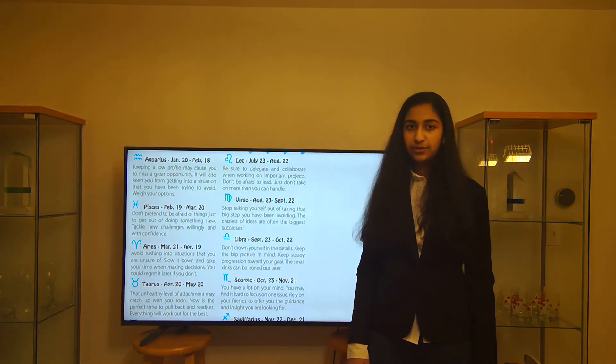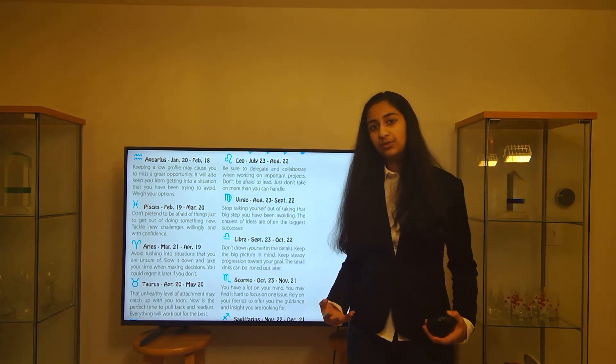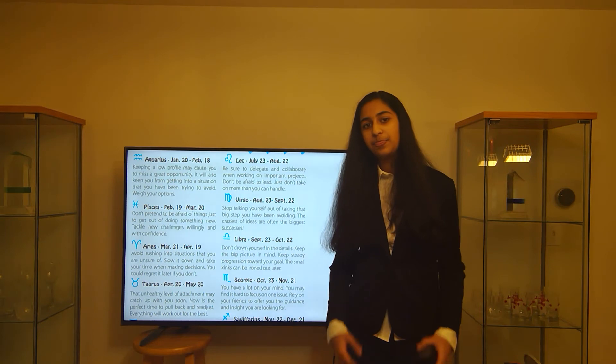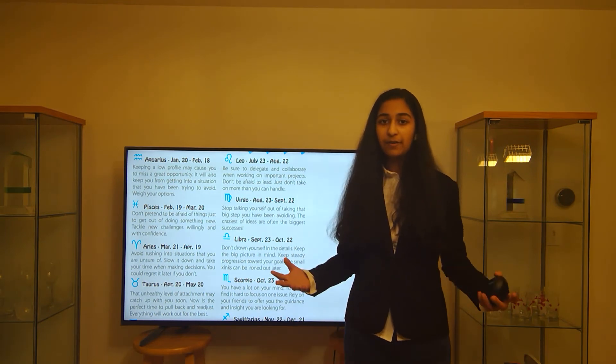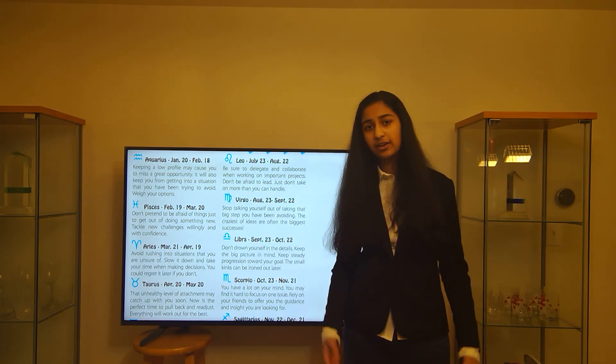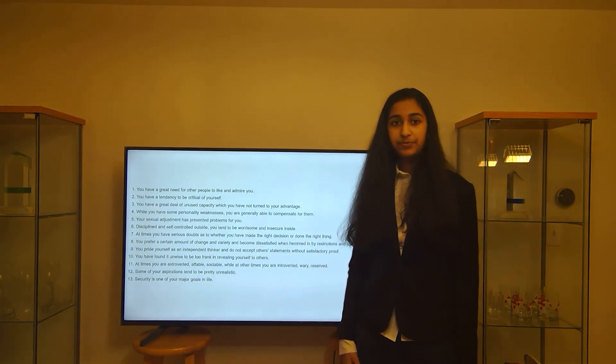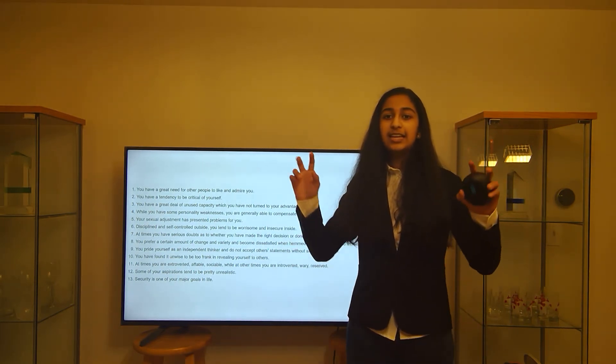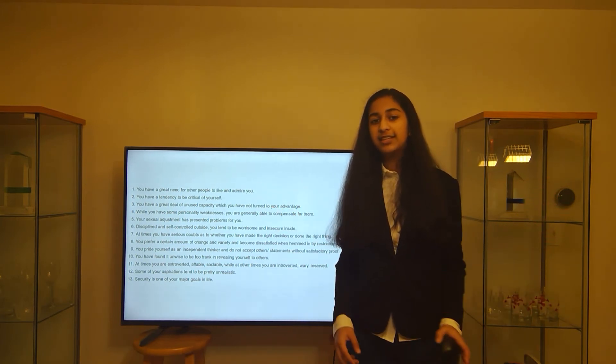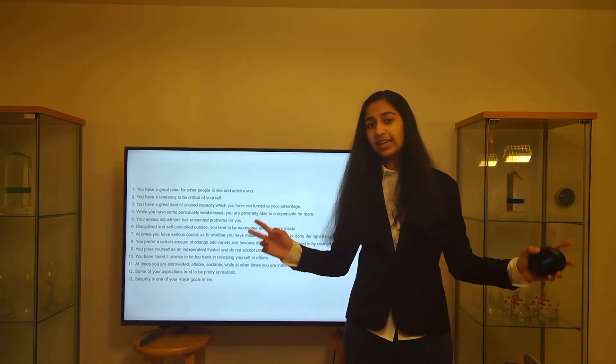The effect was then observed when Forer gave a class of students a personality test. Every student got a paragraph of extremely generalized feedback, with very vague character descriptions. Here's a copy. It told them that they tended to be critical of themselves, and have a great need for people to like and admire them.